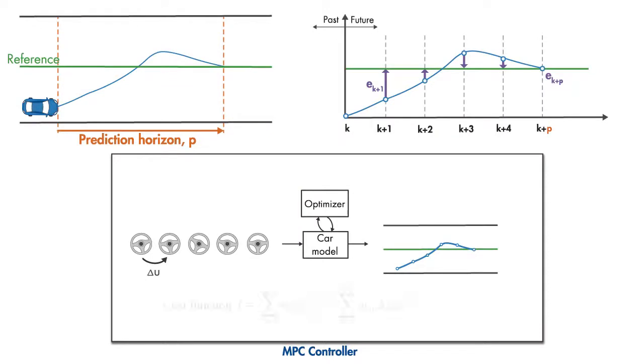The cost function J of this optimization problem includes both these terms, and is represented as a weighted squared sum of the predicted errors and steering wheel angle increments.